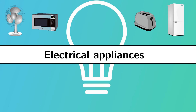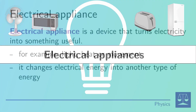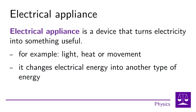In this video, we'll talk about electrical appliances and how these appliances fall into several groups. An electrical appliance is a device that converts electricity into something useful, for example, light, heat, or motion.